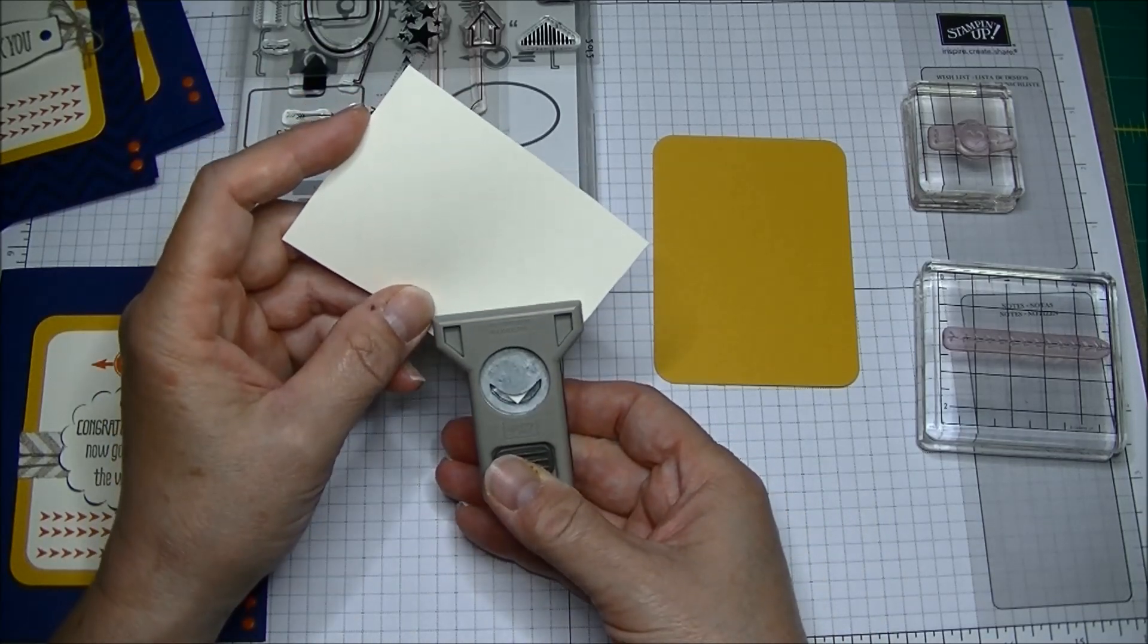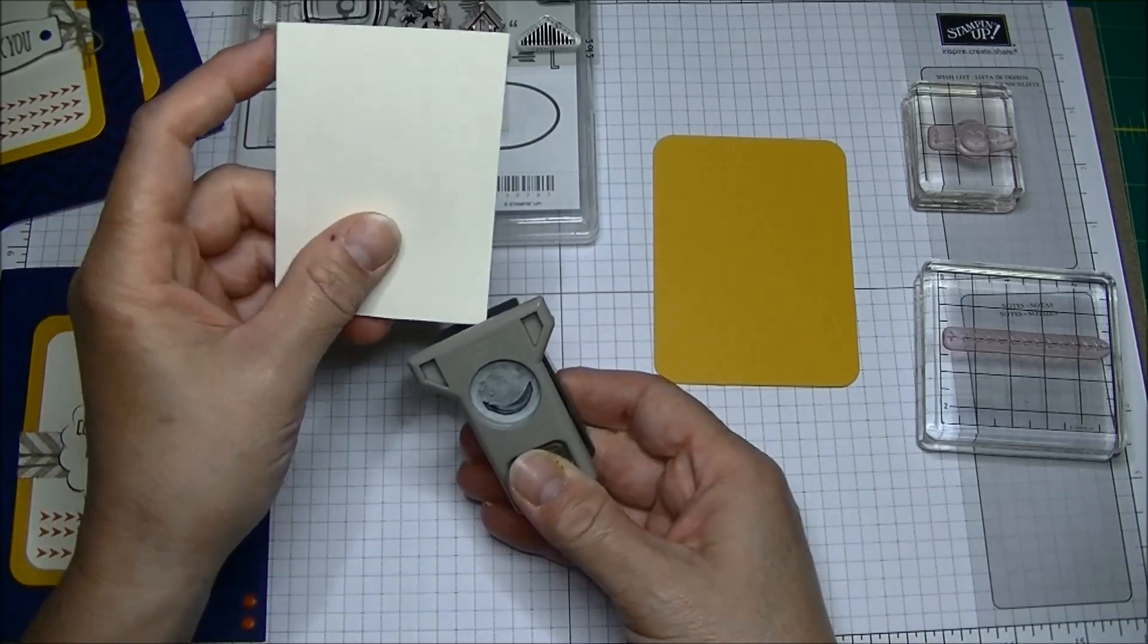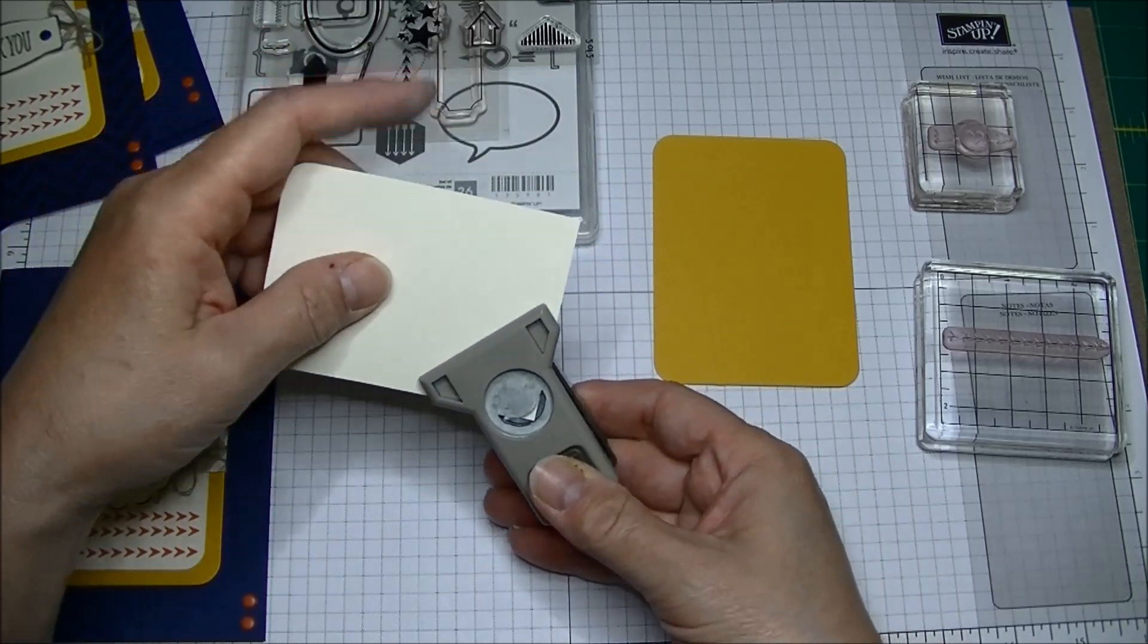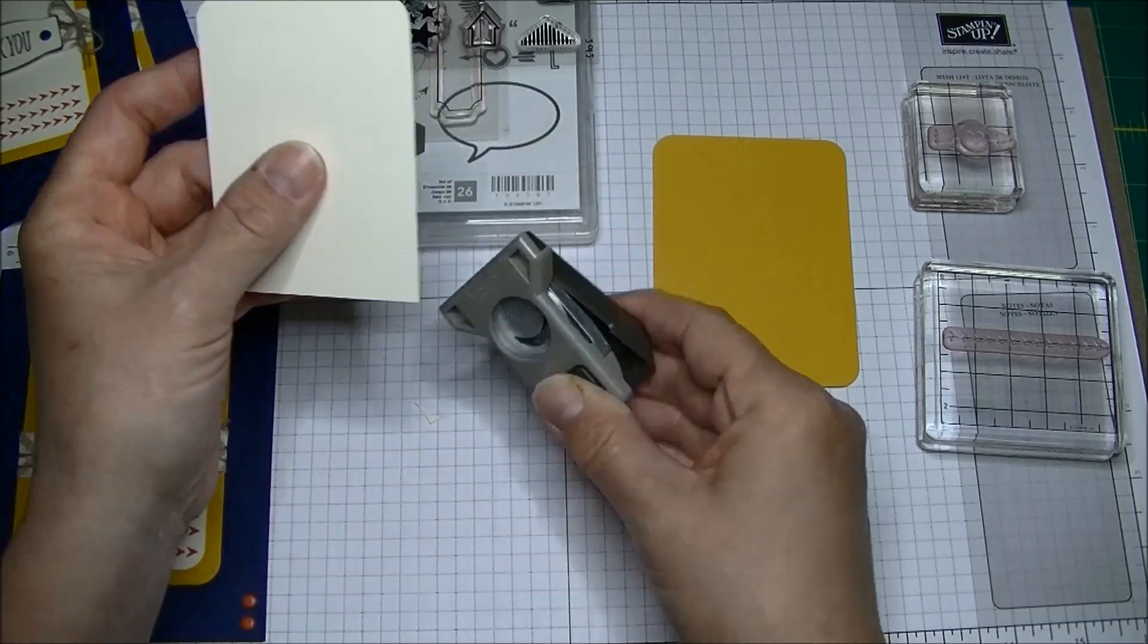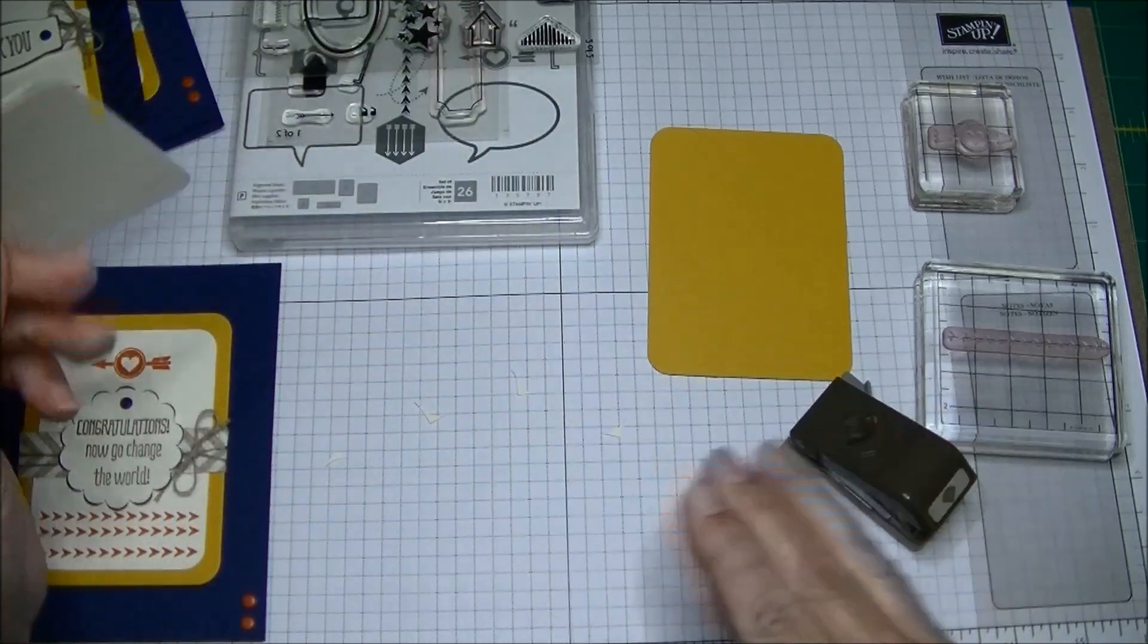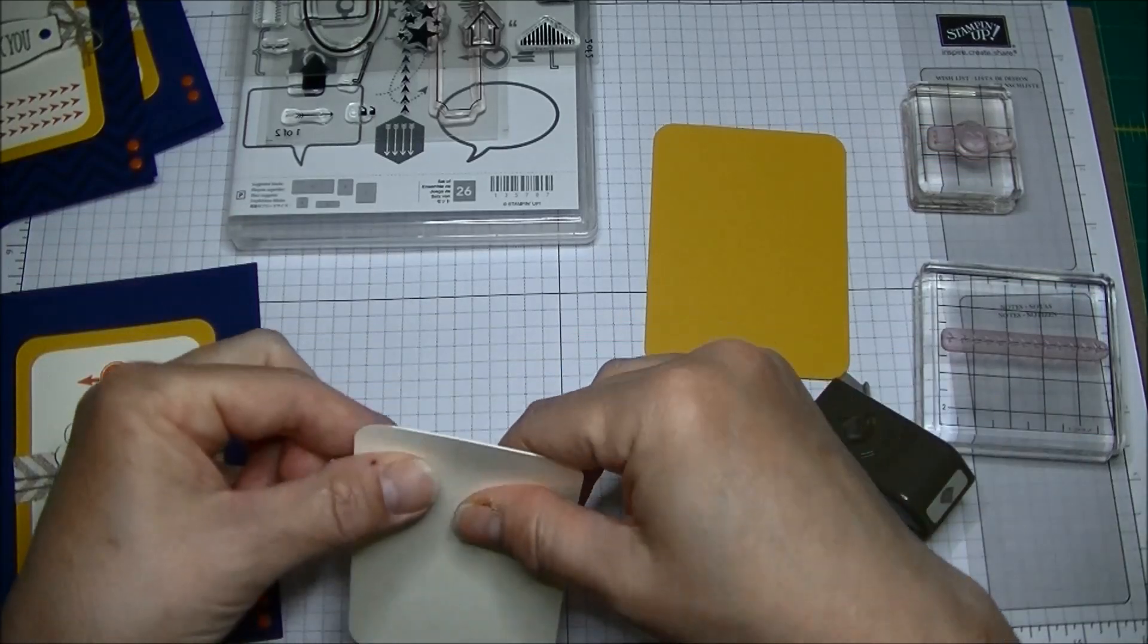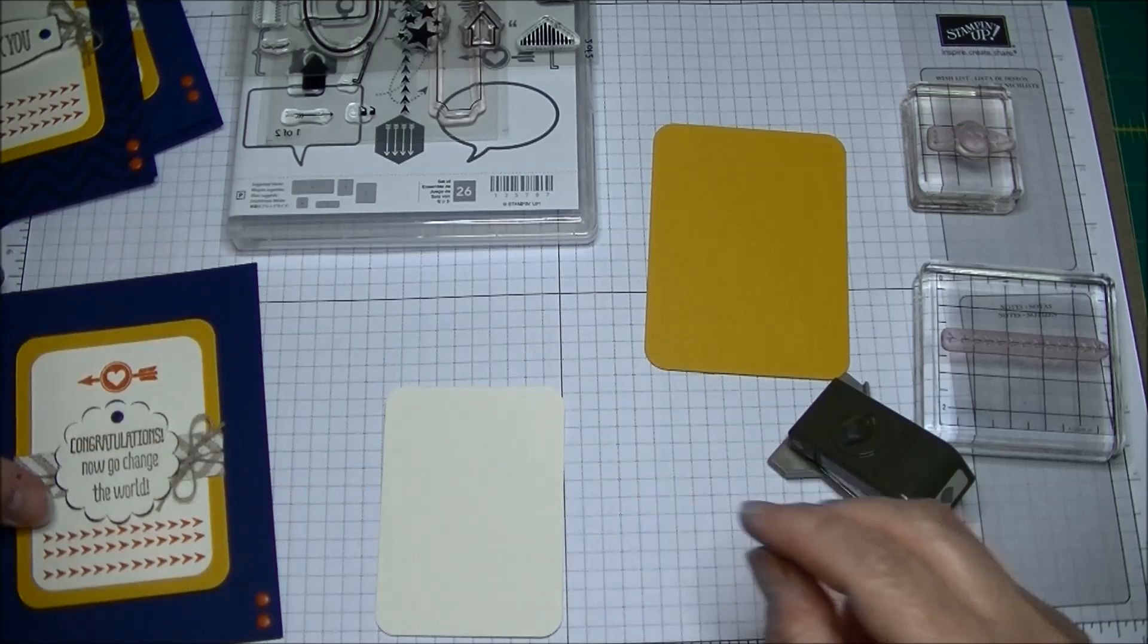I don't know what's different about this than the original one but this one works so much better for rounding corners. Always punch from the back and you can see that the corner goes in and it just beautifully rounds. My last corner rounder did not do this and it's so easy to use. I'm always amazed at how easy the punches are to use because I have arthritis in my hands. These are a breeze.